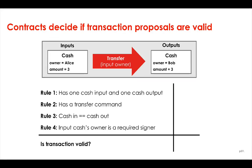Now that we've looked at Corda transactions, we can look at the contracts that govern them. A contract in Corda is a function that takes a transaction proposal as input and checks whether a set of conditions are true. The transaction proposal is then only valid if all the conditions imposed by the contract are met.